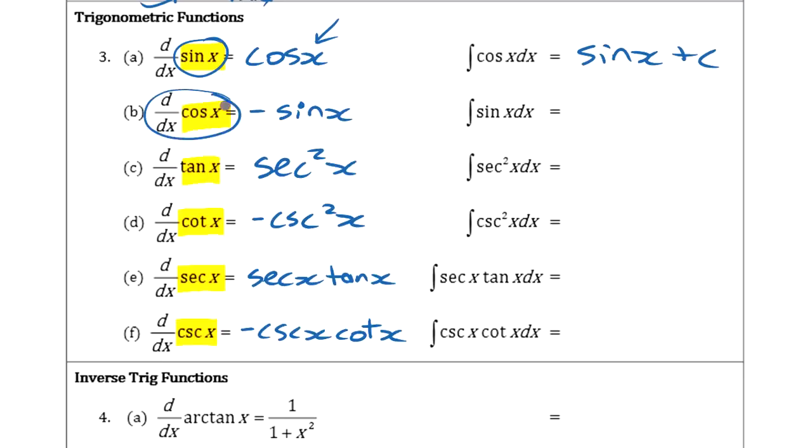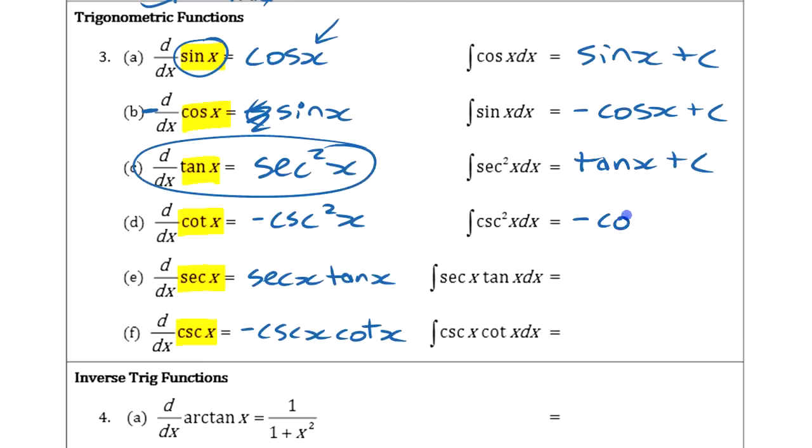If derivative of cos is minus sine, integral of sine is going to be minus cos, right? Because we could, as before here, we could times both sides here by negative one, right? Put a negative in front there, and that gives us our integral of negative cos is positive sine, right? Derivative of tan is secant squared, so integral of secant squared is tangent, plus a constant. And similarly here, this is going to be minus cotangent. And then down here, derivative of secant is secant tangent, so integral of secant tangent is secant plus a constant. And similarly down here, cosecant.